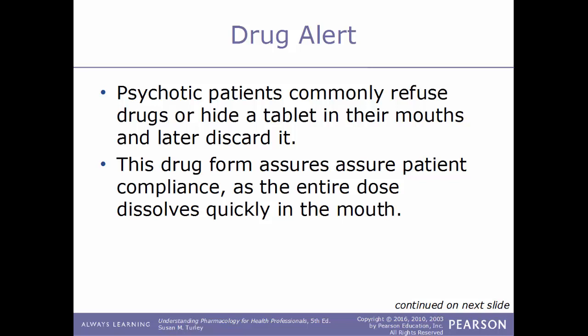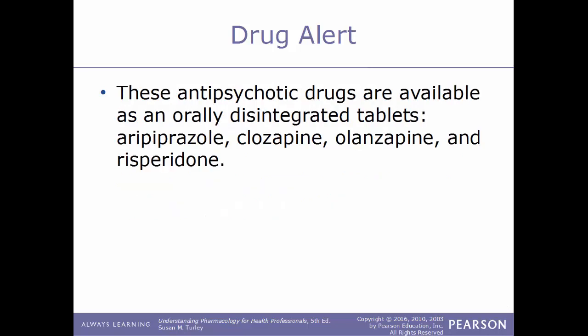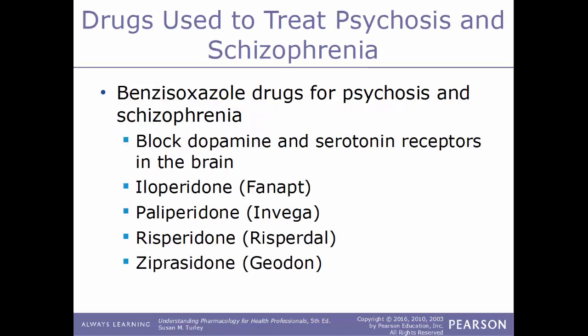Other antipsychotic drugs available as orally disintegrating tablets include aripiprazole, clozapine, olanzapine, and risperidone. The benzisoxazole category of drugs used to treat psychosis and schizophrenia also works by blocking dopamine and serotonin receptors. Examples include iloperidone (Fanapt), paliperidone (Invega), risperidone (Risperdal), and ziprasidone (Geodon).